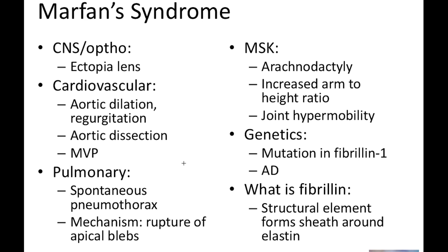From a cardiovascular standpoint, remember that patients with Marfan syndrome have bad connective tissue and thus their tunica intima and media are not going to be as robust. They are going to present with aortic dilation and aortic regurgitation. Remember that this can be heard as a diastolic murmur, heard best at the right second intercostal space.